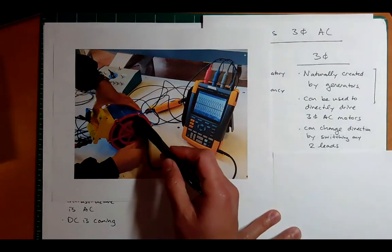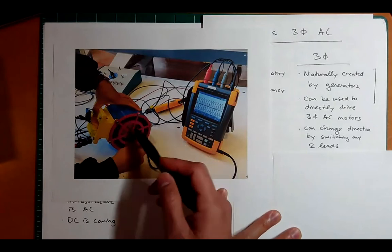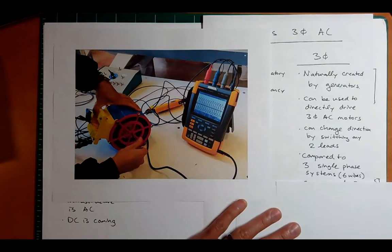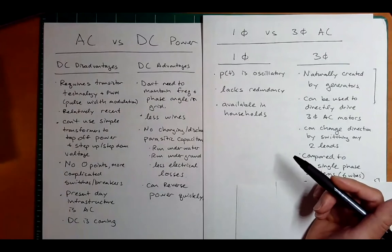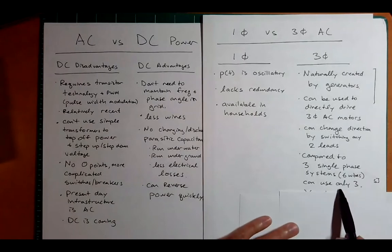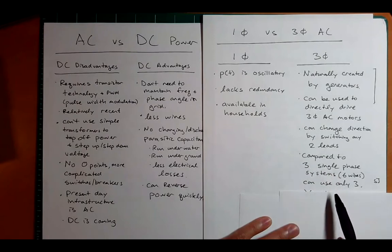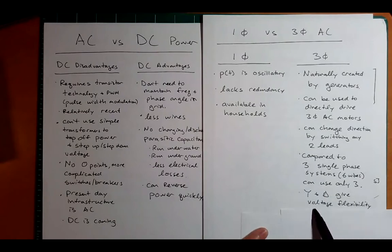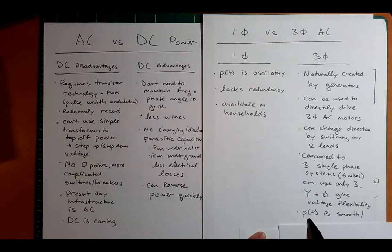You can change the direction — if you flip any two of the three leads, you can change the direction of rotation of the motor, which essentially creates a positive or negative sequence. If you wanted redundancy using three single phase systems, that would cost six wires. But we can actually connect it up in a special way and only use three, so compared to three single phase wires, we're more economical. We can connect it as Y or delta for flexibility in voltage, and the instantaneous power when you sum all three is smooth.